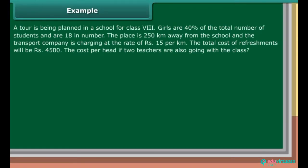Example: A tour is being planned in a school for class 8. Girls are 40% of the total number of students and are 18 in number. The place is 250 km away from this school and the transport company is charging at the rate of Rs. 15 per km. The total cost of the refreshments will be Rs. 4,500. Find the cost per head if two teachers are also going with the class.